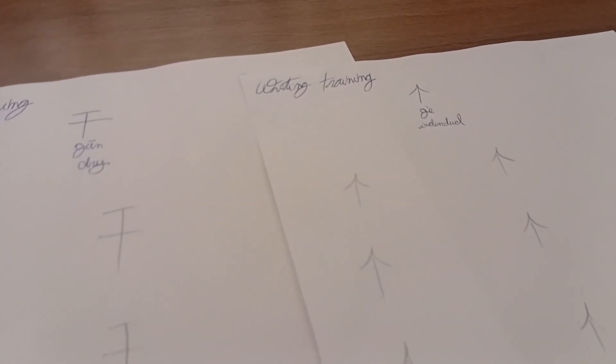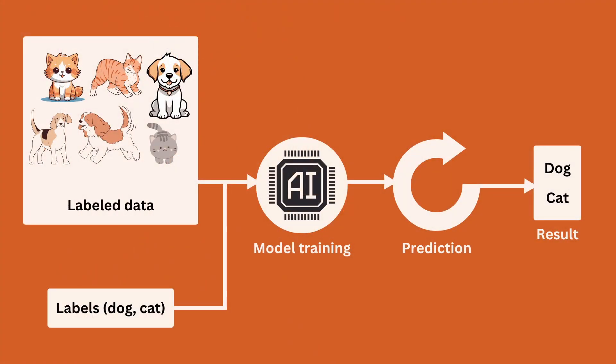Recently, I embarked on a journey to learn Chinese, specifically simplified Mandarin. And to be honest, it's been tough — getting the tones right, memorizing the characters, figuring out the stroke order. At some point, an idea popped in my head: what if I tried to teach Mandarin to an AI? It wasn't just curiosity. I was really interested in discovering how an artificial intelligence would learn the language and what lessons I could extract from that process and apply to my own study routine.